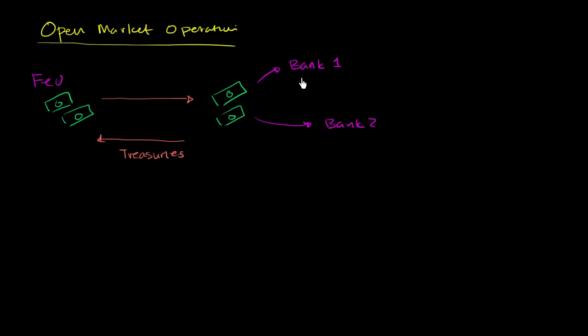And since there's more money in bank one and bank two, you have the supply of money going up. Supply going up. And also the demand for reserves is going up. This cash right here, these are reserves. So you have the demand for reserves going down.